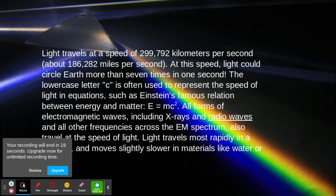The lowercase letter c is often used to represent the speed of light in equations such as Einstein's famous relation between energy and matter, E = mc², for all forms of electromagnetic radiation.